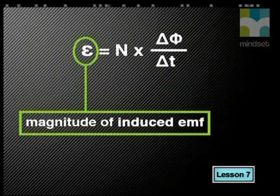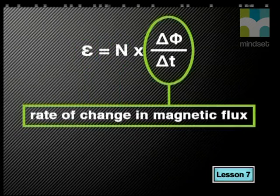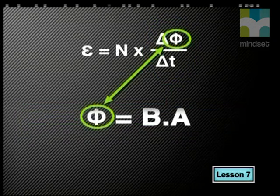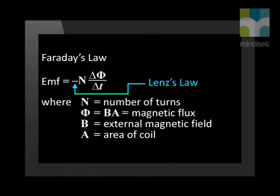In this equation, E stands for the magnitude of the induced EMF, N is the number of turns in the coil, and delta phi over delta T is the rate of change in magnetic flux. Remember that the magnetic flux phi is equal to the product of the magnetic field B and the cross-sectional area A through which the field passes. To explain the direction of the induced EMF, we have to take Lenz's law into consideration. According to this law, the direction of the current opposes the change in magnetic flux by creating its own magnetic field. Using the right-hand rule, we point our thumb in the opposite direction of the change in magnetic flux, and the direction in which our fingers curl indicates the direction in which current flows. This is built into Faraday's law equation by placing a negative sign in front of N.